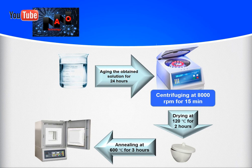In the next step, you should dry the obtained precipitation at 124°C for 2 hours, and the final step is annealing at 600°C for 3 hours. Finally, you have the TiO2 nanoparticles powder.